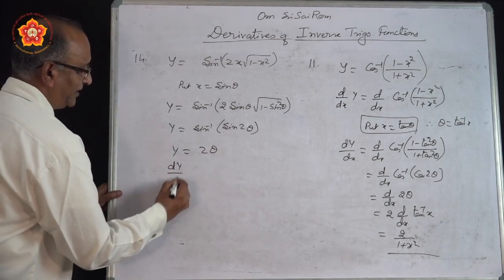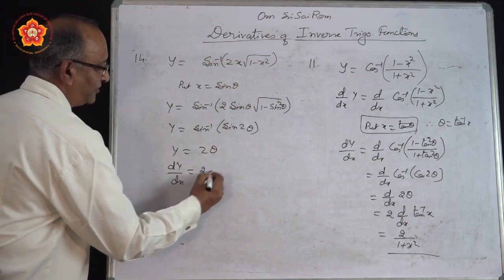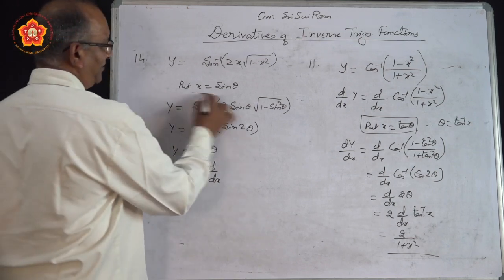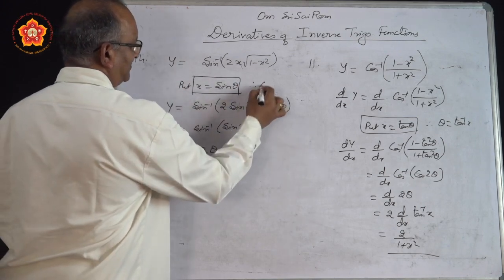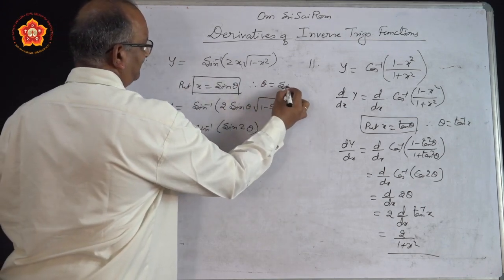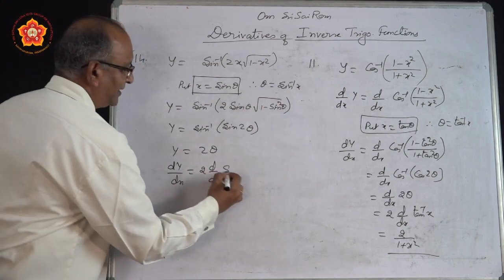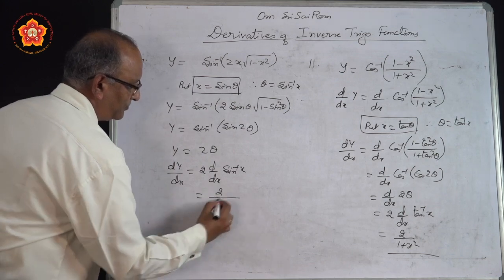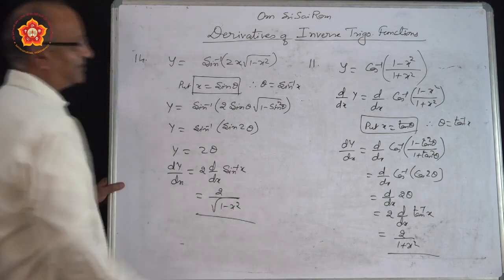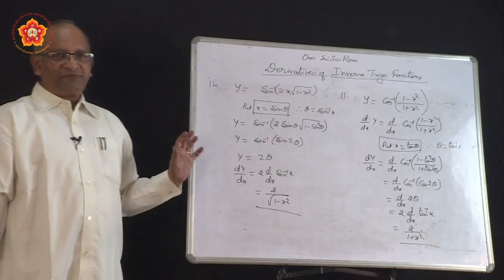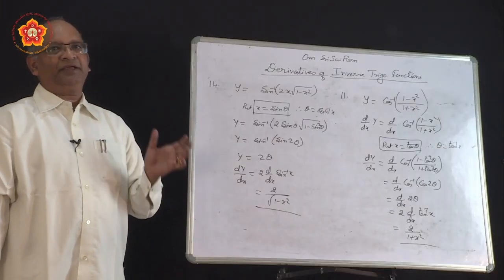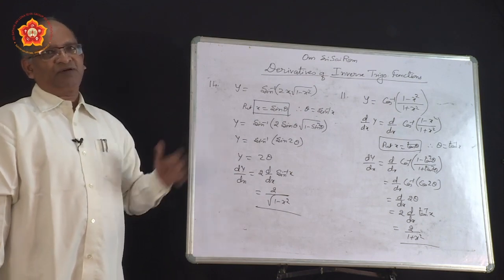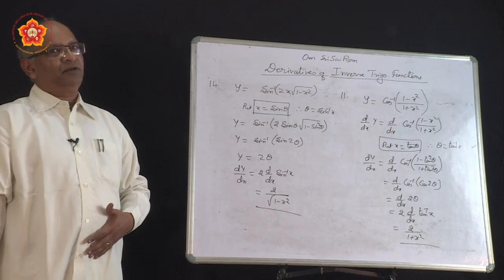If I have to find dy/dx I need to find d/dx of θ. Again, what is θ? If x = sin θ, then θ = sin⁻¹ x. So it is the derivative of sin⁻¹ x, and we know the formula: 1/√(1−x²). That is the answer. In this manner, by substituting appropriate functions, inverse trigonometric function problems can be solved effortlessly.